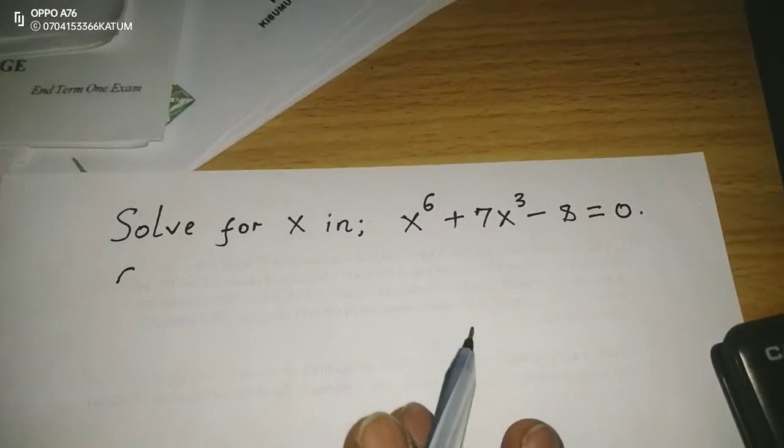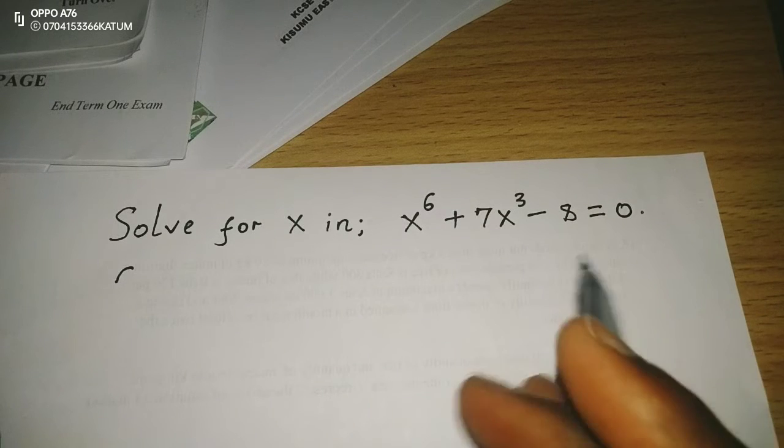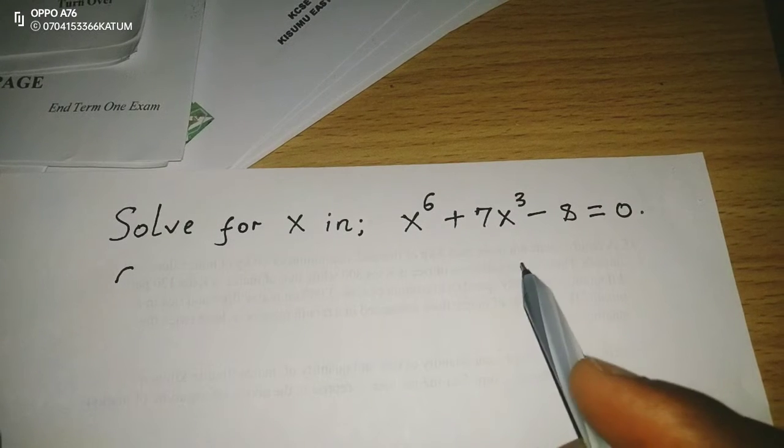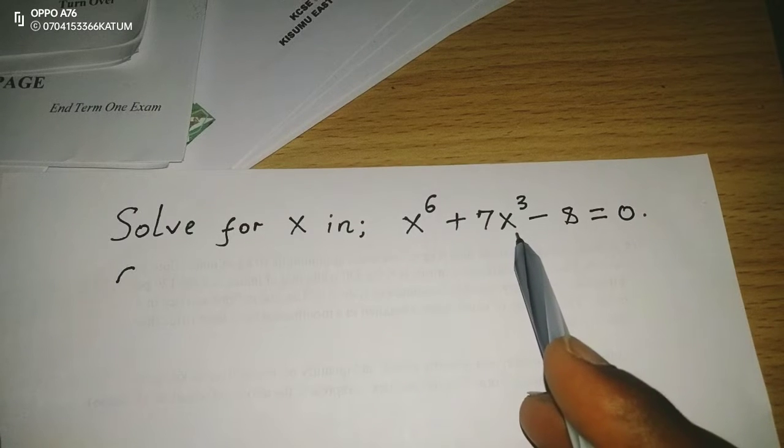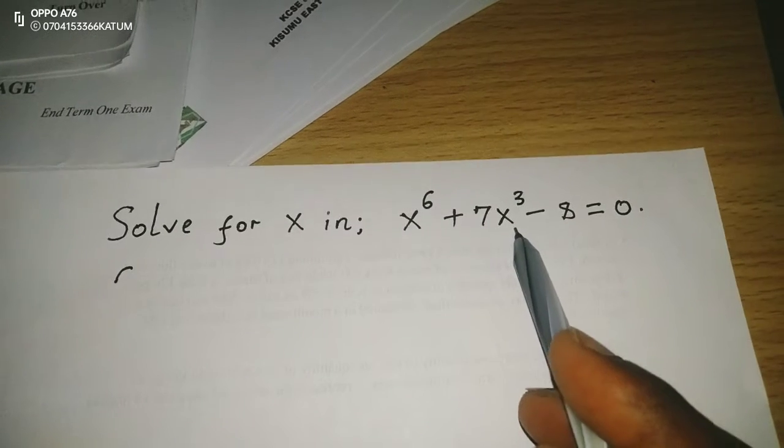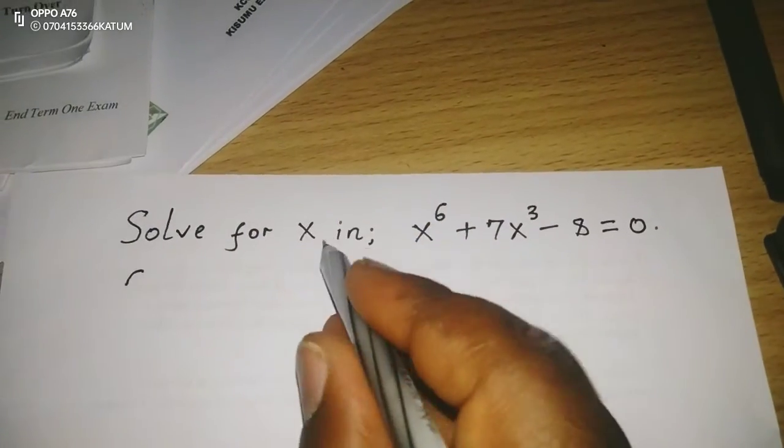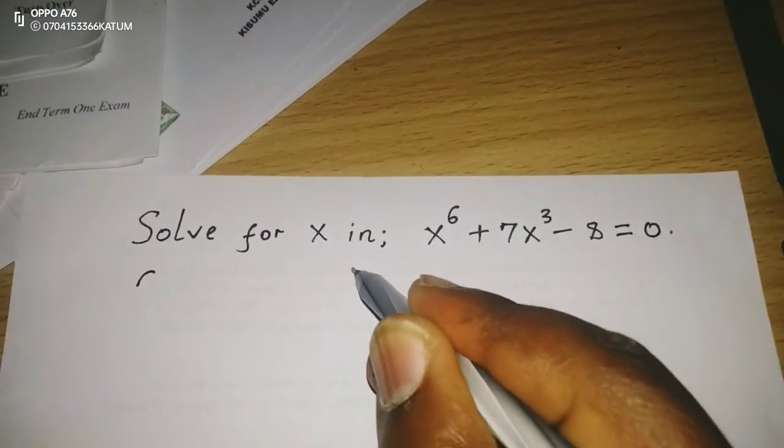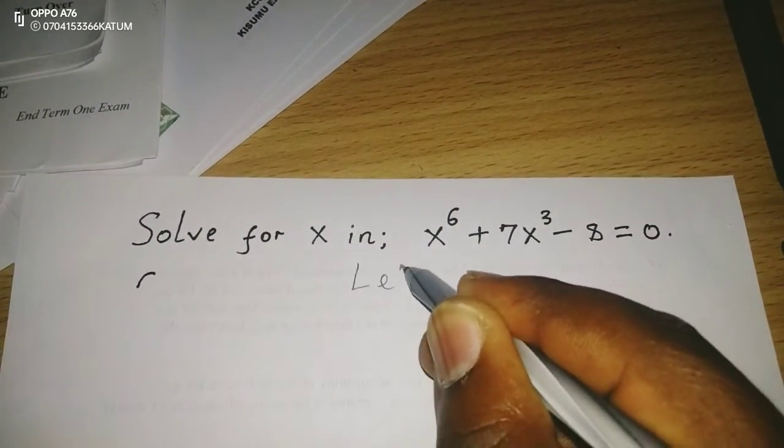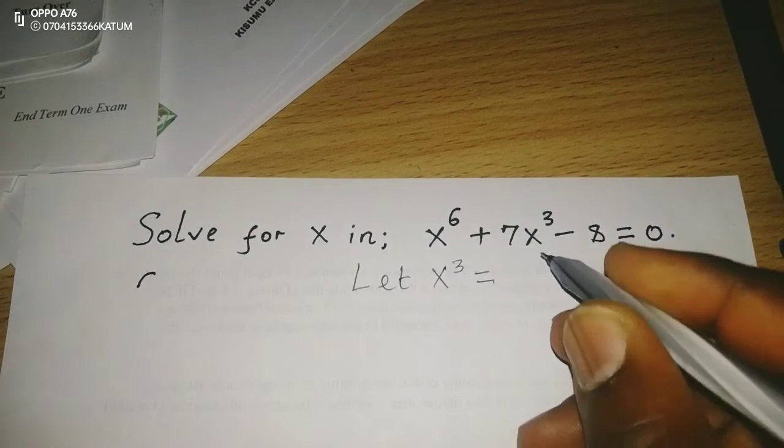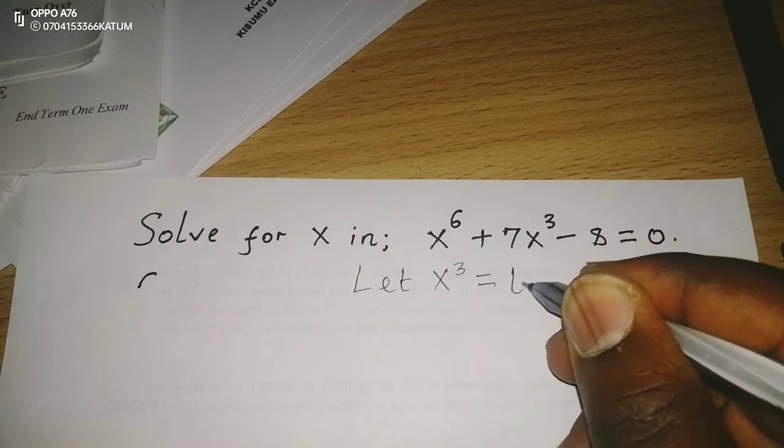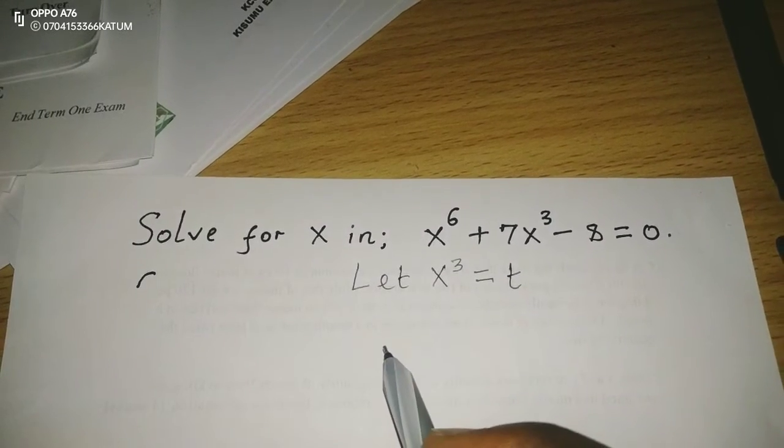As we can see, the equation is not quadratic, it is not linear, it is not a cubic, but x^3 is appearing twice. Therefore, we can let x^3 be a certain unknown city, for instance.